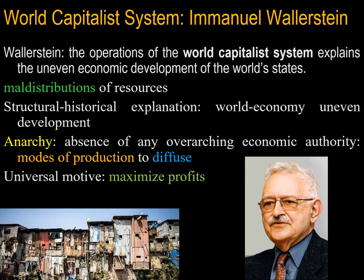Emanuel Wallerstein proposed the world capitalist system — a Marxian theory drawing on Marxist mechanical concepts. Wallerstein argues that the world capitalist system explains the uneven economic development of the world's states through a systemic maldistribution of resources occurring as a result of interstate relations, particularly between the developed and developing worlds. This all began with the collapse of feudalism. Given that the international system is based on anarchy — the absence of any overarching economic authority — the modes of production diffuse across national boundaries. The universal motive for all actors in the system is to maximize profits.